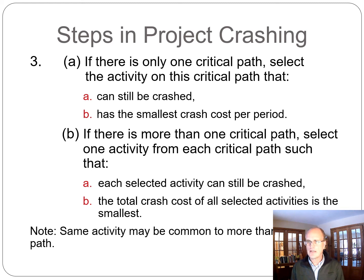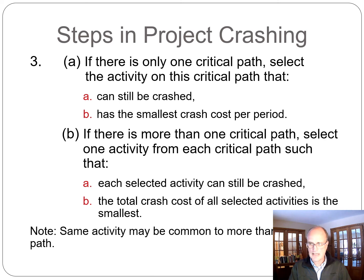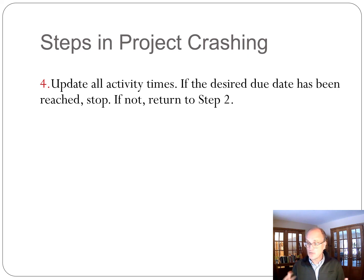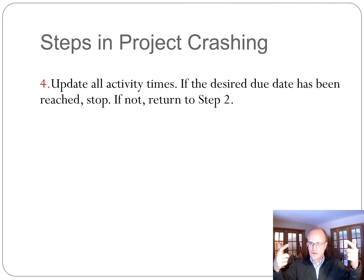The tricks that can be introduced are: something else becomes critical, and you have to choose between one or two options when there are multiple critical paths. Those are really the two things to particularly pay attention to. The last step is to re-evaluate: redraw the network, update the activity times. Have you shortened the project as much as needed? If yes, stop. If not, look at what your critical paths are — they might have changed — and go back to step two.